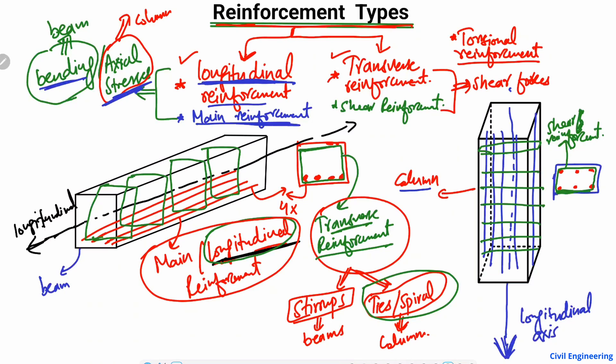The shear reinforcement also helps to increase the shear resistance of the column and to increase the lateral stability — or confinement — of the main reinforcement. So these are the two main types of reinforcement: the longitudinal and main reinforcement are used for bending and axial stresses, while the transverse reinforcement is used to take or increase the shear resistance of the column or beam.